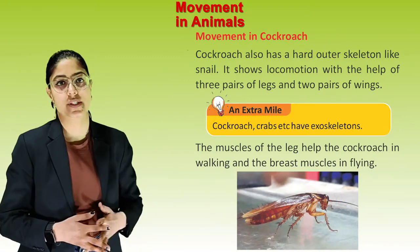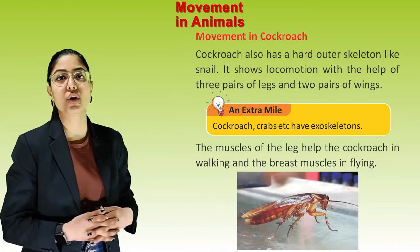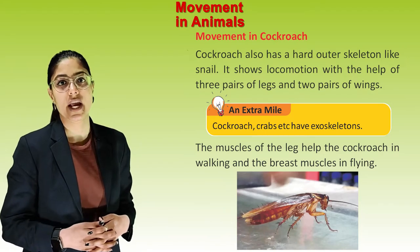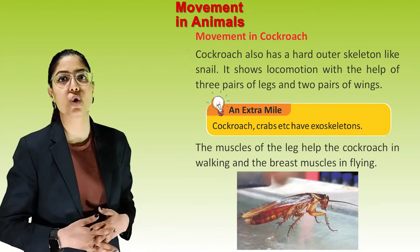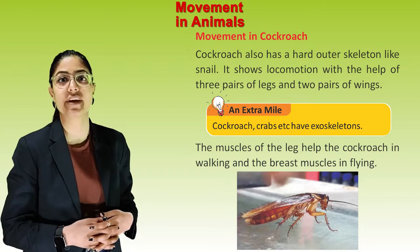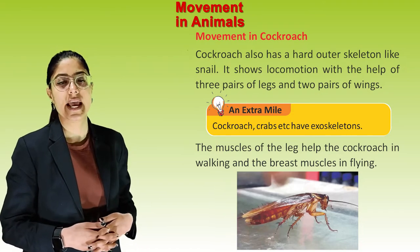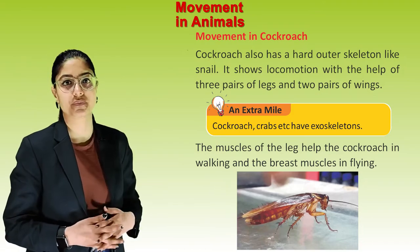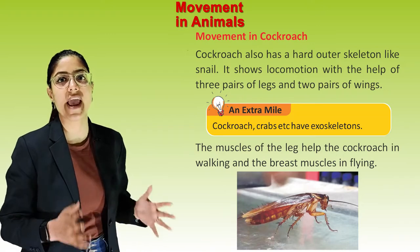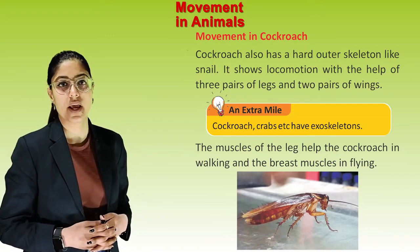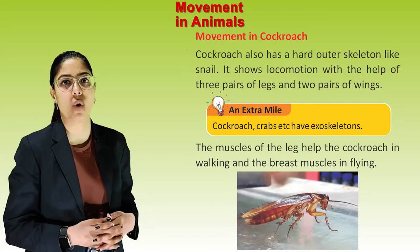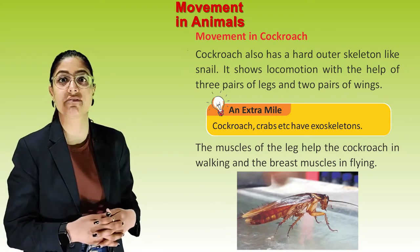Movement in cockroaches. Cockroaches also have a hard outer skeleton like snails, and they show locomotion with the help of three pairs of legs and two pairs of wings. Cockroaches, crabs, etc. have exoskeletons. The muscles of the legs help the cockroach in walking, and the breast muscles help in flying.